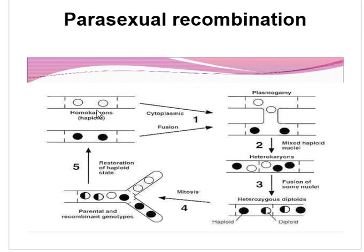In Step 2, karyogamy — the fusion of nuclei in the mycelium — has been demonstrated. Nuclear fusion may be of two types: fusion between like nuclei and fusion between unlike nuclei, resulting in homozygous and heterozygous diploid nuclei respectively. If the genotype of unlike nuclei present in the heterokaryotic mycelium is A and B, then five types of nuclei can be formed: two types of haploid nuclei, two types of homozygous diploid nuclei, and one type of heterozygous diploid nuclei.